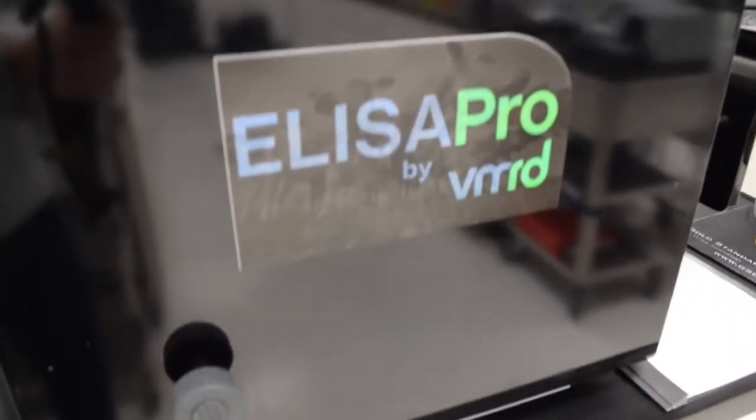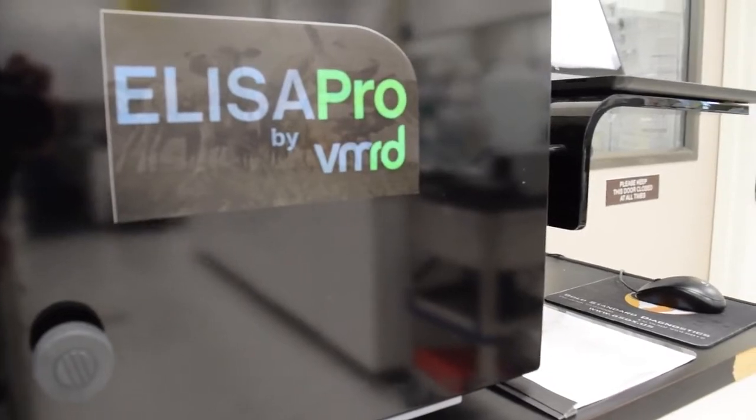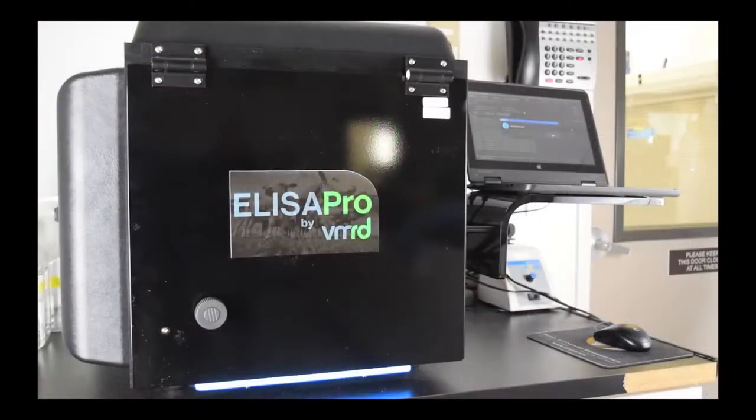We are pleased to introduce the ELISA Pro assay processor. It is fully automated to run your VMRD assay from start to finish, providing consistency between runs and saving valuable personnel time for other laboratory efforts.